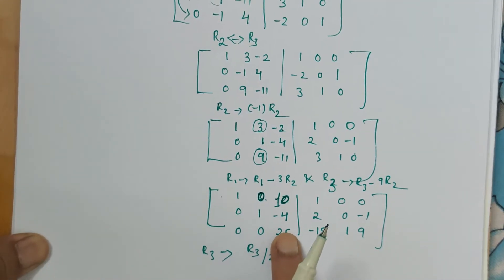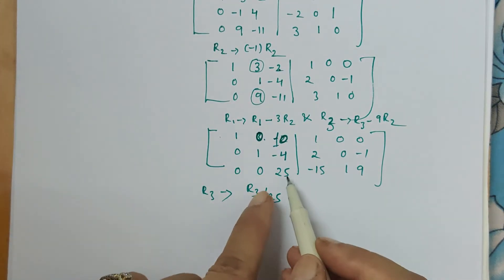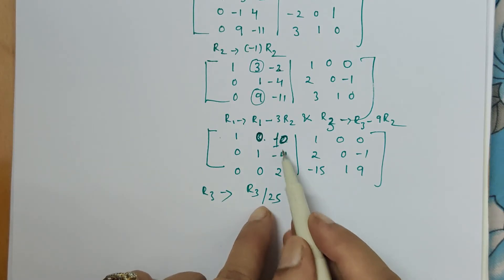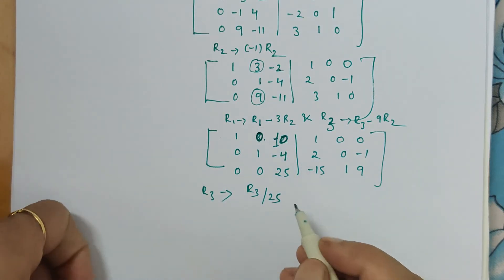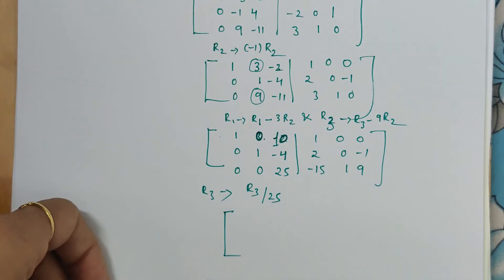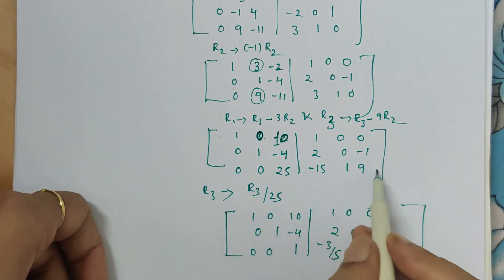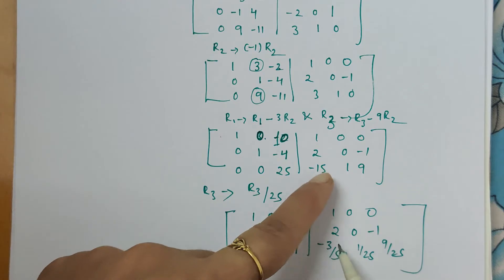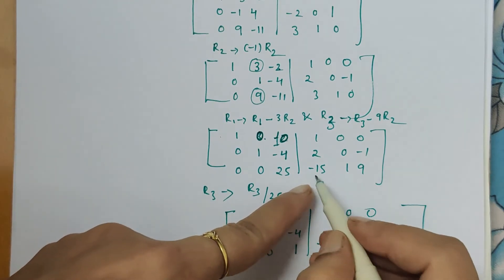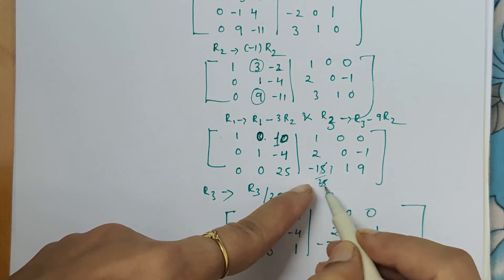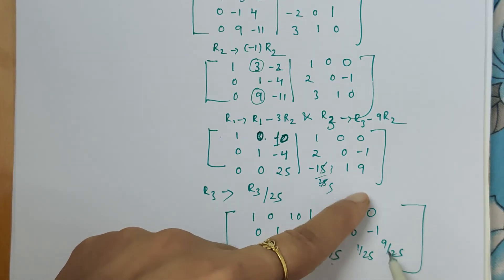Now I want this element to be 1. So for doing so, I have to divide this element by 25 because there is no other option which will help us in getting so. By dividing all elements of third row by 25, we get 1 here and minus 3 by 5 here, because when we divided by 25, 5 is, 15 is 5 by 25, and then 1 by 25, 9 by 25.